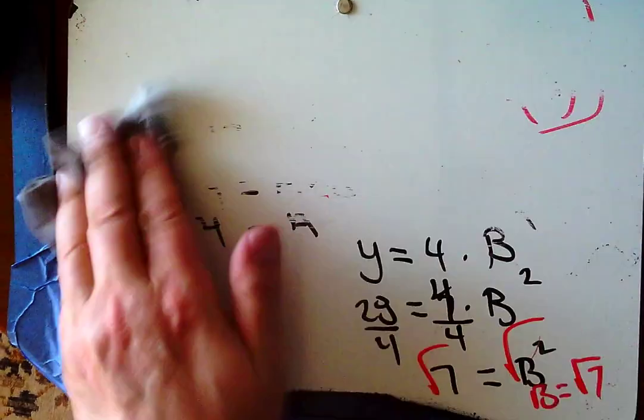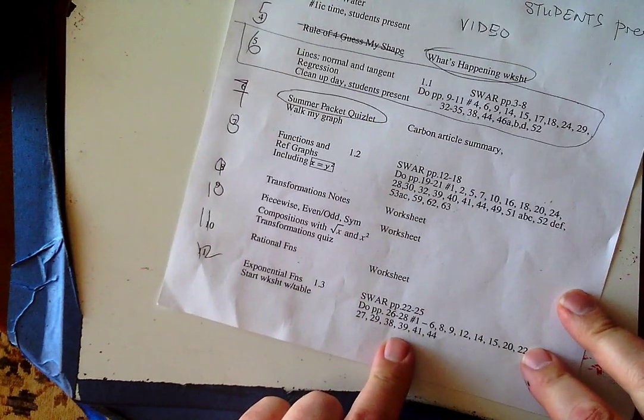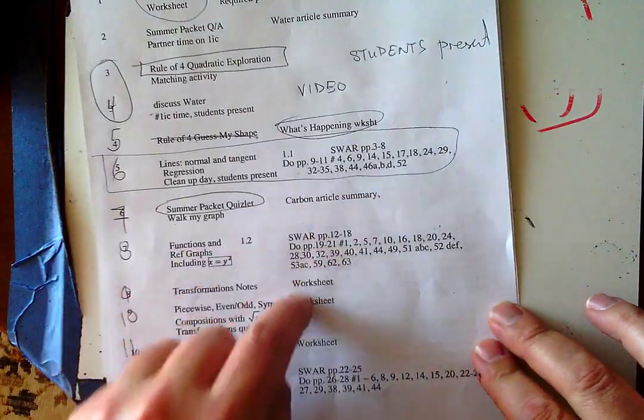We have a homework assignment that goes with this — it's assignment number 12, book work. You'll find it in our Office 365 Chapter 1 folder. Let me know if you have difficulty finding it. I hope you have a great day, everyone. Don't forget to bring any questions to our live sessions or post on the group.